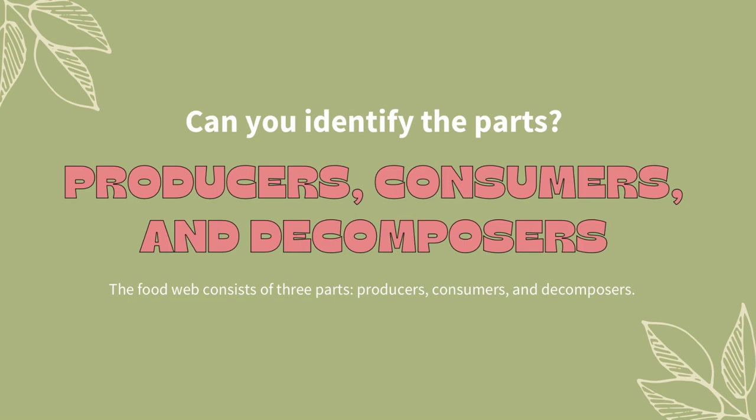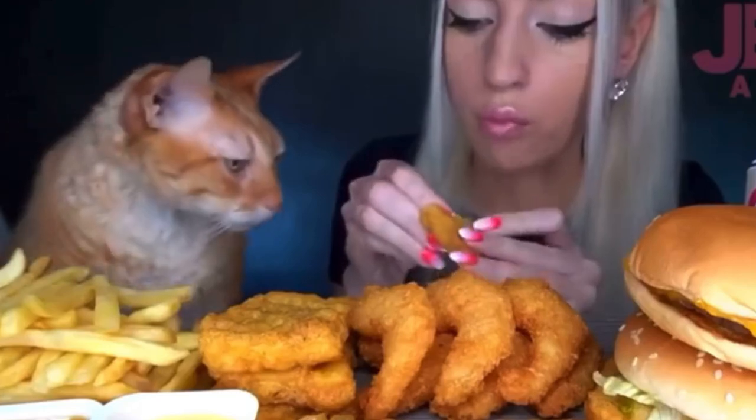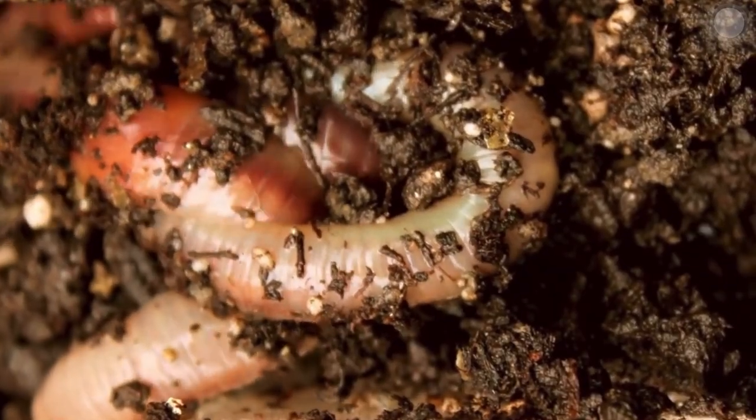It is equally important to answer the question: can you identify the parts? The food web consists of three parts: producers, consumers, and decomposers.